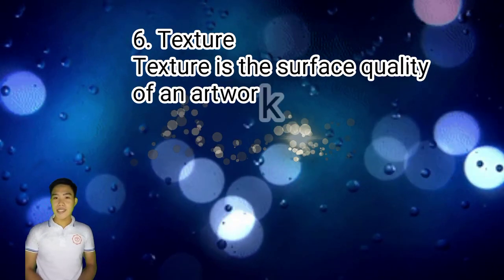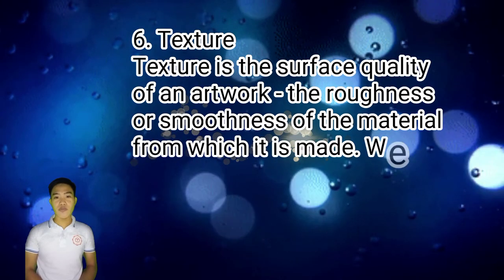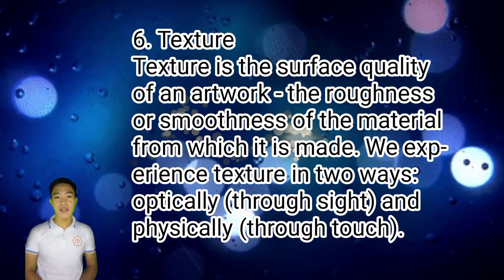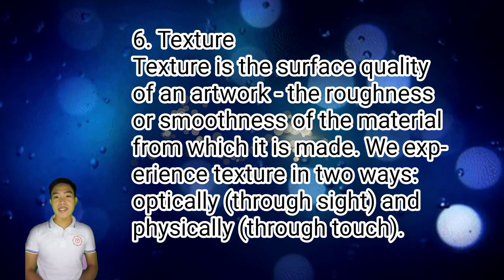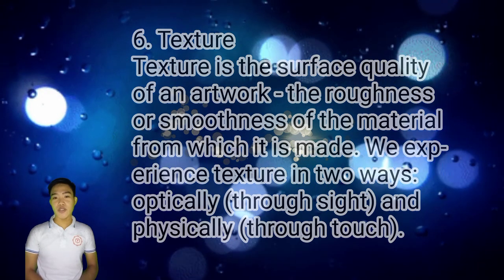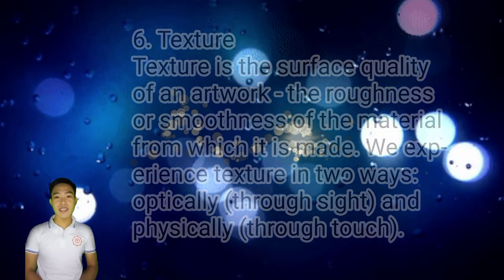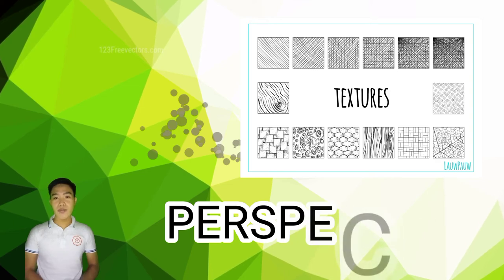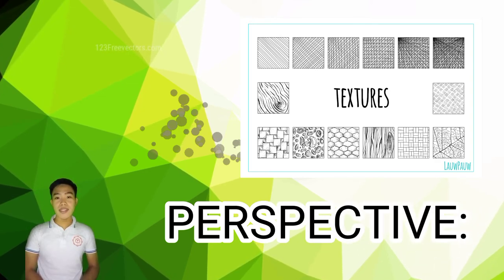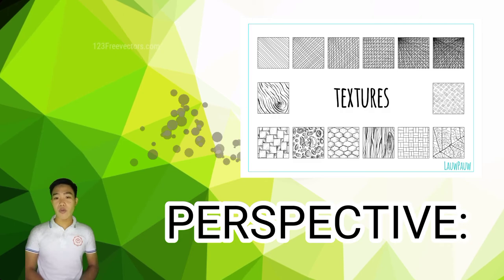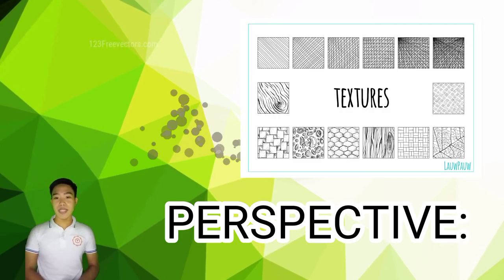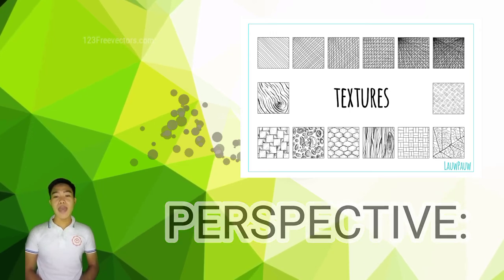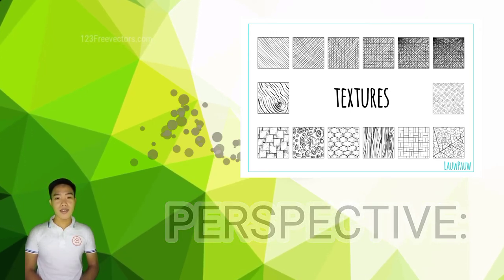Number six is texture. Texture is the surface quality of an artwork — the roughness or smoothness of the material from which it is made. We experience texture in two ways: optically through sight and physically through touch. From my perspective, texture as a basic element of design adds to the overall look of our visual designs, making it aesthetically pleasing beyond what we see or perceive, and it emanates and resonates our aptitudes.